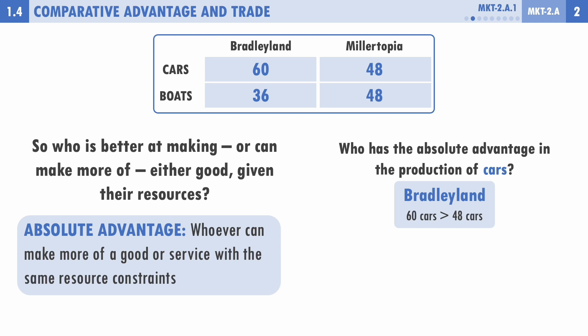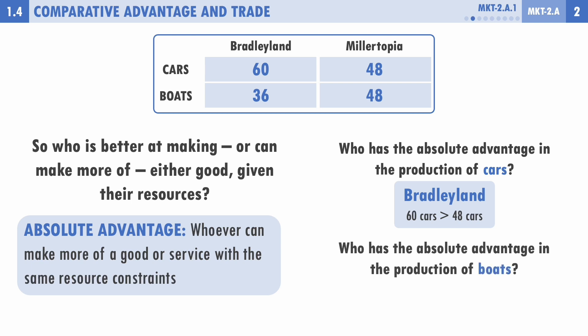Who has the absolute advantage in boats? Bradley Land can produce 36 boats, Millertopia can produce 48 boats. So Millertopia has the absolute advantage in boats, because 48 is greater than 36.